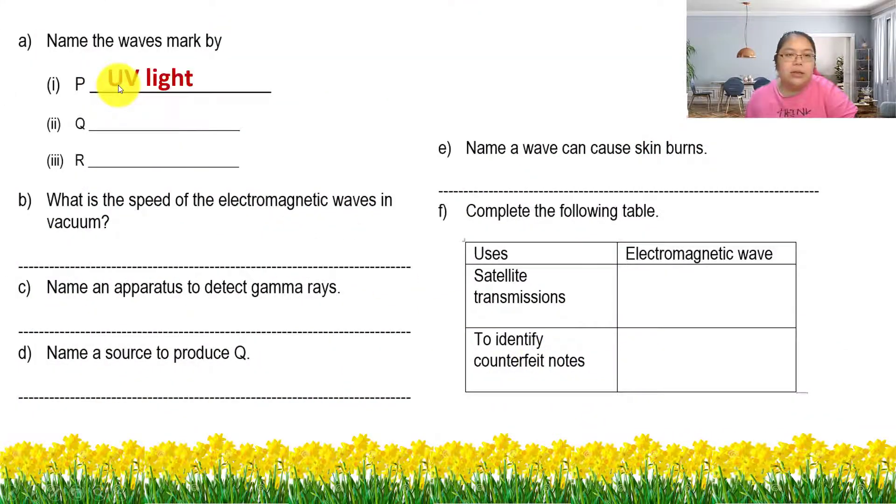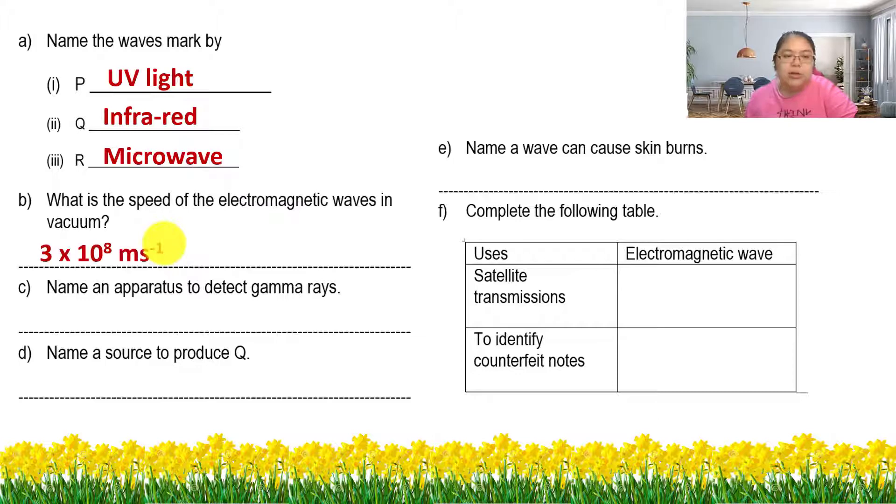We're going to check the answer. P is UV light, Q is infrared, R is microwave. What is the speed of electromagnetic waves in vacuum? That's the speed of light. We just mention three times ten to the power of eight. Name the apparatus to detect gamma ray. This one you not yet study, so I give the answer. It's a GM tube, actually Geiger-Mueller tube. They can detect alpha, beta, and gamma.